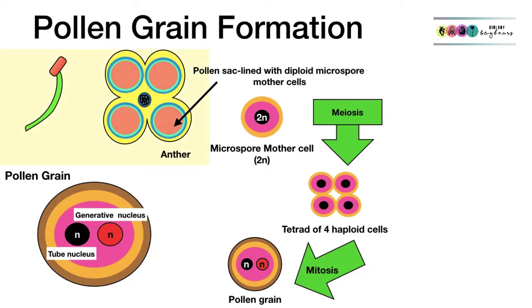So let's go through that one more time. Inside the anther are these four chambers known as the pollen sacs. Inside the pollen sacs are these microspore mother cells. They are diploid. Each of these microspore mother cells can undergo meiosis to produce a tetrad, a group of four haploid cells. Each one of these can then undergo mitosis to produce this pollen grain that has two haploid nuclei. One of them is the tube nucleus and the other is the generative nucleus.